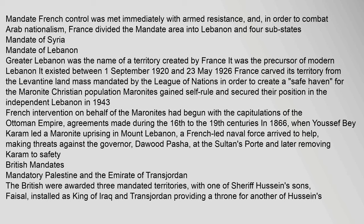Maronites gained self-rule and secured their position in independent Lebanon in 1943. French intervention on behalf of the Maronites had begun with the capitulations of the Ottoman Empire — agreements made during the 16th to the 19th centuries. In 1866, when Yusuf Bey Karam led a Maronite uprising in Mount Lebanon, a French-led naval force arrived to help, making threats against the governor, Dawoud Pasha, at the Sultan's port and later removing Karam to safety.